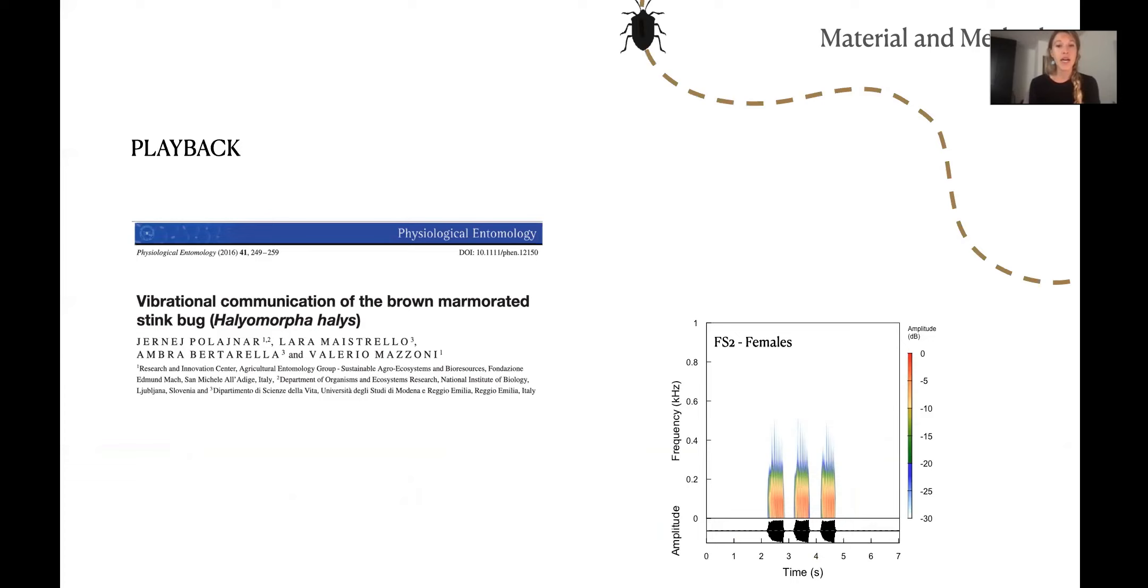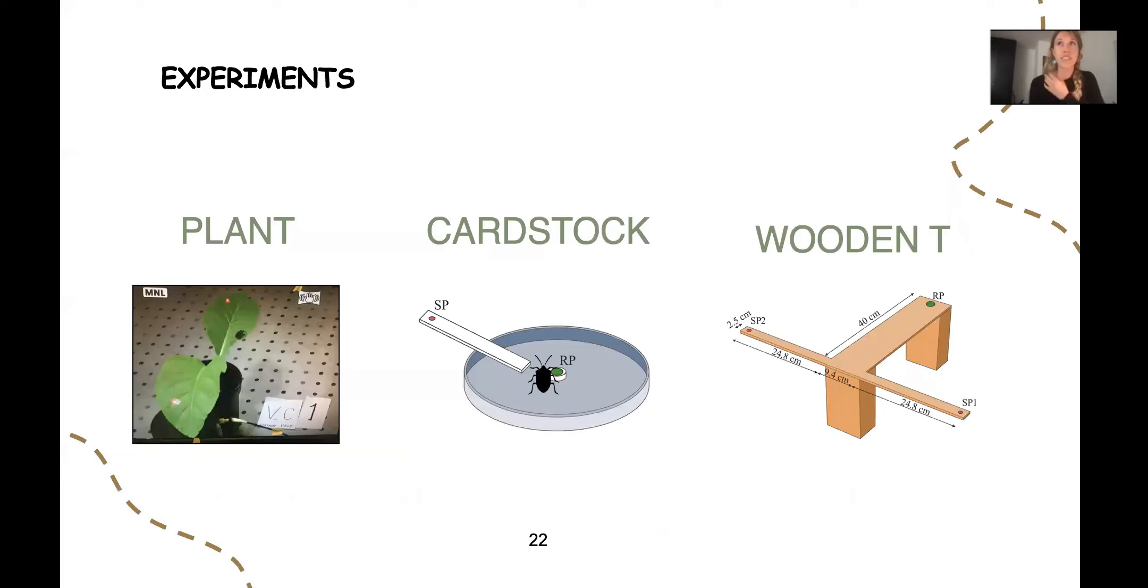The playback used as template for the trials was an FS2 from our library, which was based on previous publication, which consisted of a series of approximately 0.5 second long and regularly repeated pulses with dominant frequency of around 76 hertz and a total duration of 11.5 seconds.